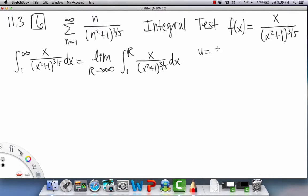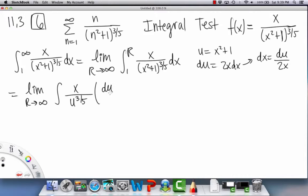And here we have a u sub going on. So u could equal x squared plus 1. And du is then 2x dx. So then dx is going to be du divided by 2x. Okay. So now we just keep rewriting this limit in the front, as we always do. And then I'm going to refrain from putting in the bounds here, just because I'm subbing in the u's. So then we'll have the x still on top. And then u to the 3 fifths. And then we have, in for dx is du over 2x. So the x's cancel.